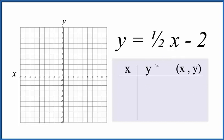So let's start out with, how about we put zero for x, one half times zero, that's zero, zero minus two, that gives us a negative two.